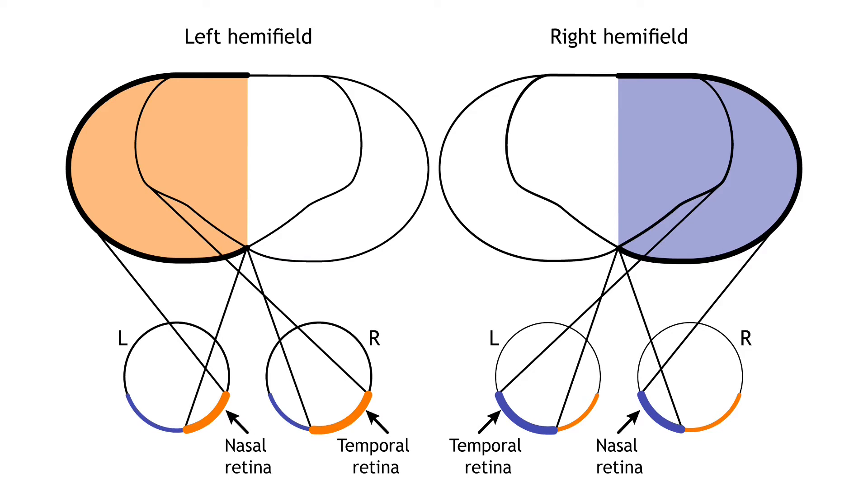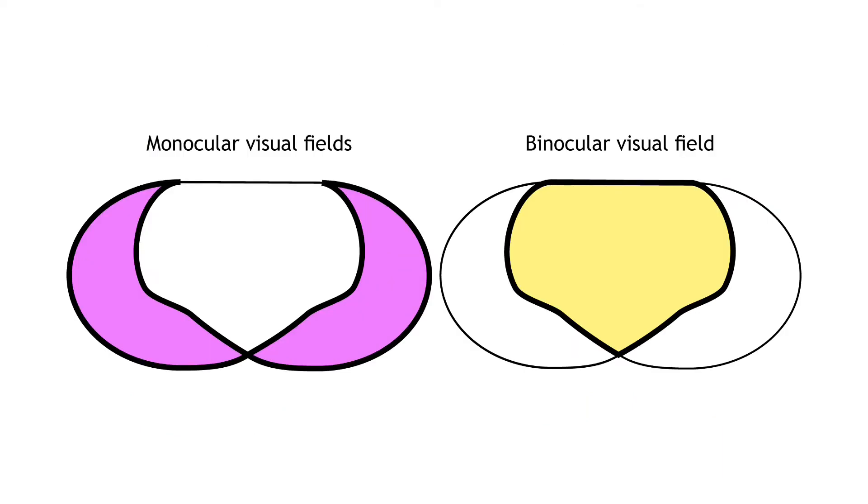The nasal retina from one eye, along with the temporal retina from the other eye, are able to view an entire hemifield. Finally, the full visual field can be separated into monocular and binocular regions. Each monocular field is visual space that can only be viewed by one eye. The binocular region is the visual space that can be viewed by both eyes.